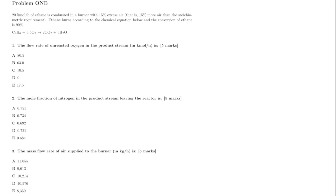So problem 1: we have 20 kilomoles of ethane being combusted with excess air in a burner, the conversion is 90%. The questions are: what is the flow rate of unreacted oxygen, and what's the mole fraction of nitrogen and so on.